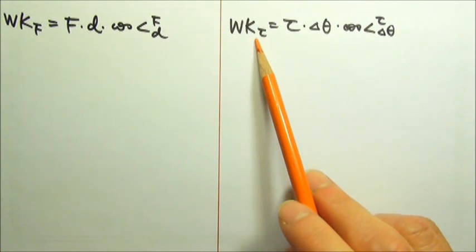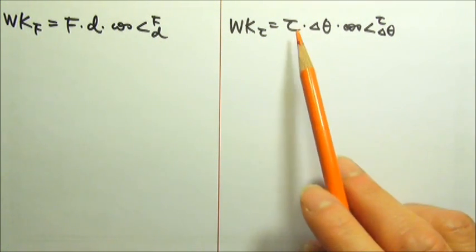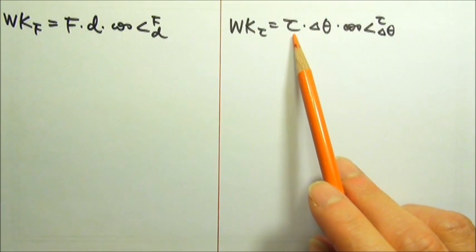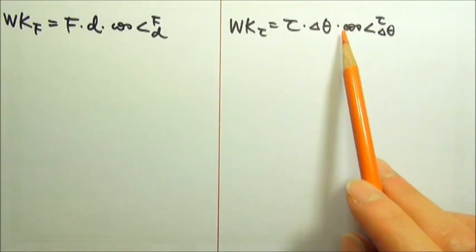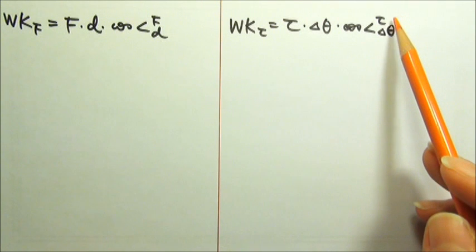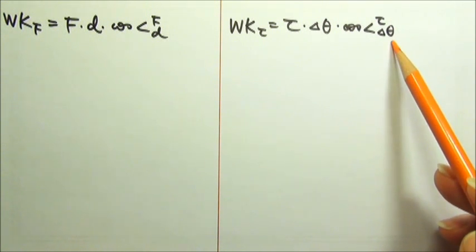To find the work done by a torque, we can use a similar equation. This work equals torque times the angular displacement times cosine the angle between the angular displacement and the delta theta.